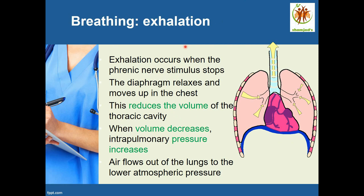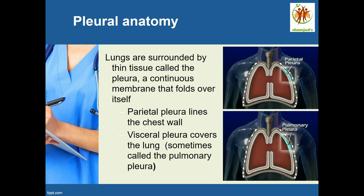Exhalation occurs when the phrenic nerve stimulus stops. The diaphragm relaxes and moves up, which reduces the volume of the thoracic cavity. When the volume decreases, intrapulmonary pressure increases, and the air flows out of the lungs. So during exhalation, the diaphragm moves up, thoracic volume decreases, pressure inside the lungs becomes higher than atmosphere, and air moves out of the lungs.